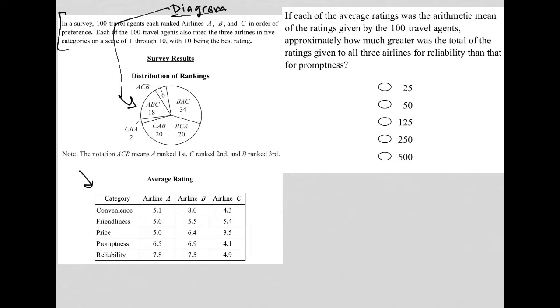related to this information. So we know at this point that the information here in the pie chart is based upon the preference of 100 travel agents, the preference between three different airlines A, B, and C. This gives us a number of how many of those travel agents ranked those airlines in the same order.